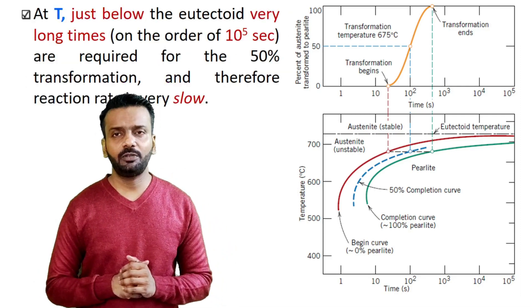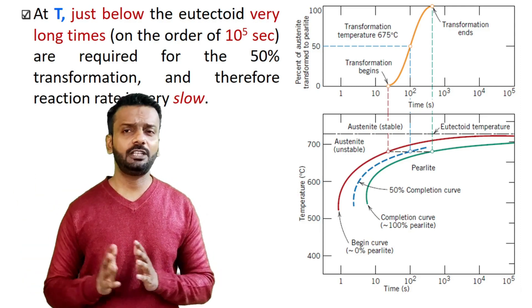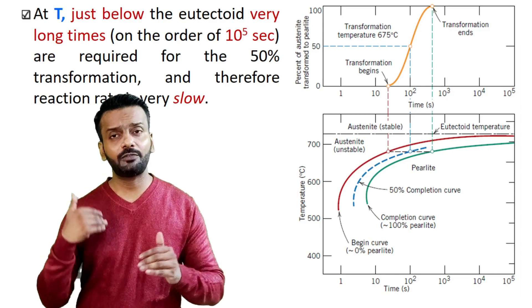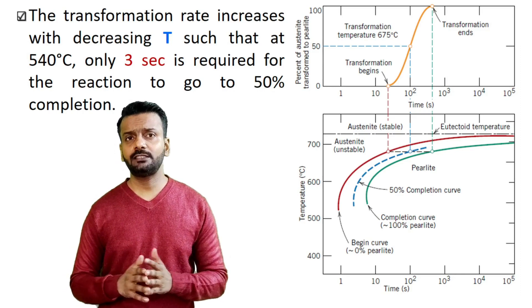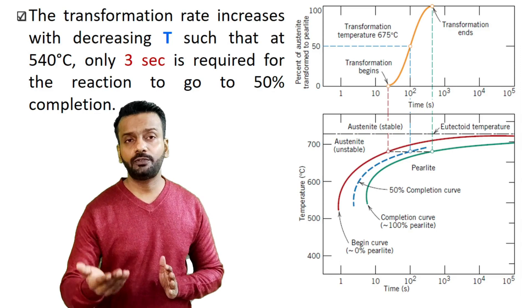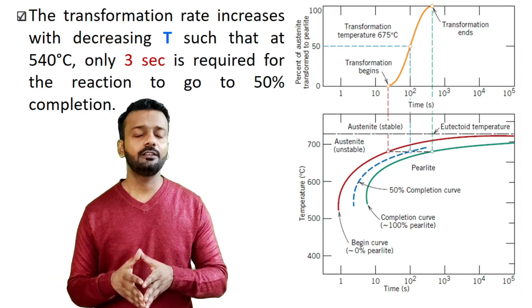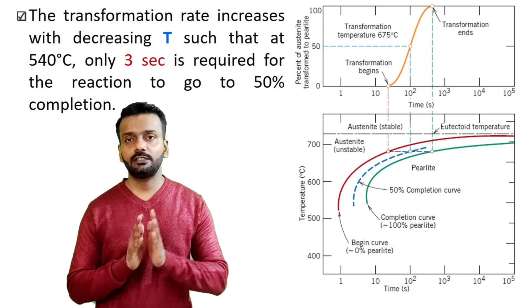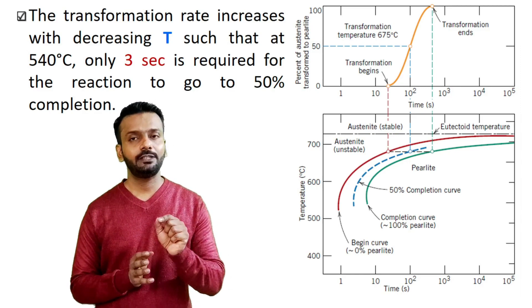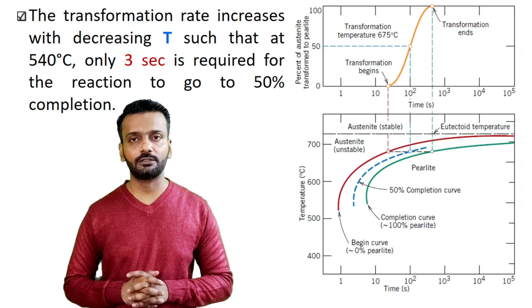Just below the eutectoid temperature, if you keep the material at that temperature for a very long time, the transformation to pearlite is very slow — it can take around 10⁵ seconds. However, the transformation rate increases as temperature decreases. At around 540°C only three seconds is required for the reaction to reach 50% completion. This is why TTT plots are so important — they tell you what cooling rate will give you what phase, and at what temperature.